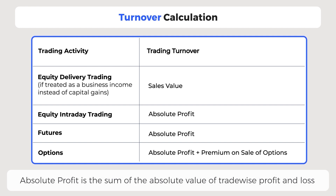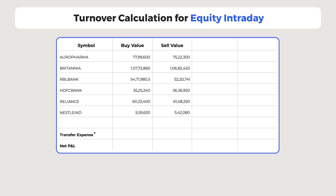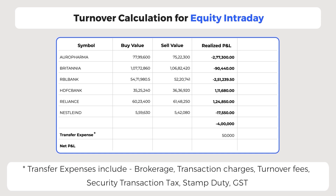Absolute profit is the sum of absolute values of trade-wise profit and loss. For example, a trader did the following intraday trades during the financial year. To calculate the realized profit and loss, we subtract the buy value from the sell value. The total realized P&L is a loss of 4 lakh for FY 2019-20. After adjusting with transfer expenses of 50,000 such as brokerage and transaction charges, the net loss is 4,50,000. Trading turnover for intraday equity is the absolute profit — we ignore the positive and negative signs — making the total trading turnover 8,73,060.